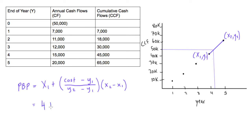So we'll get 4 plus the cost that we're looking for along this line is 50,000, so 50,000 minus y1, which was 45,000, and this is over y2, which is 65,000, 65,000 minus 45,000.